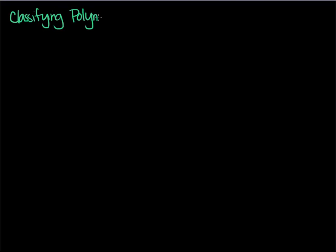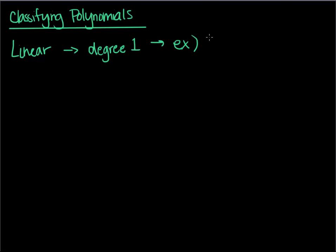Classifying polynomials. So a couple, classifying polynomials. The first type of polynomial we'll talk about, which we've done before, is a linear polynomial. This has degree one. An example would be something like one third x plus four. Of course, why do we call it linear? Because if we were to plot the points that satisfy an equation like y equals one third x plus four, then we would get a line. We know that.